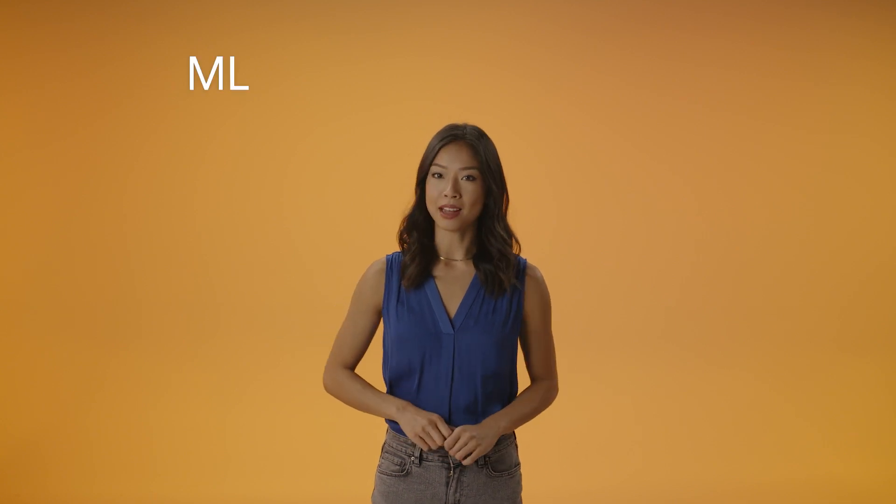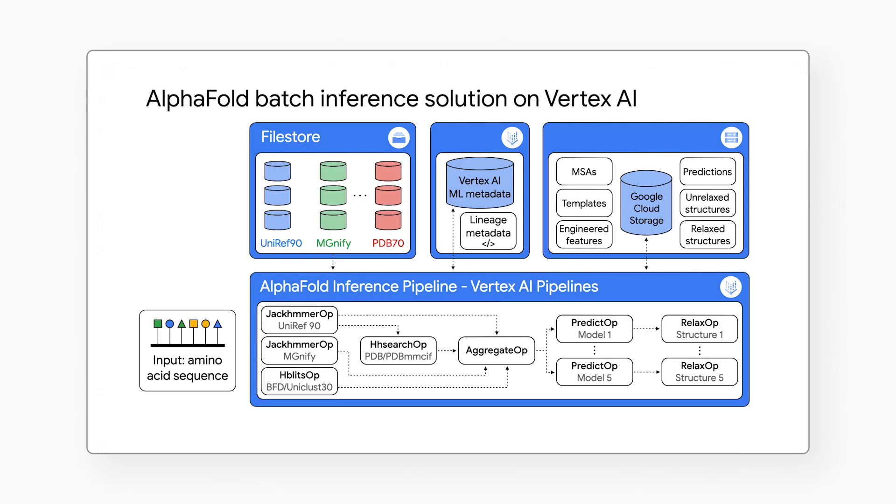For organizations that want to run a full-blown version of AlphaFold for many protein folding experiments a week, you'll want an ML pipeline orchestrator. The AlphaFold batch inference solution is a set of code samples that uses Vertex AI pipelines to support hundreds of concurrent inference pipelines with higher throughput to help you run experiments at scale.